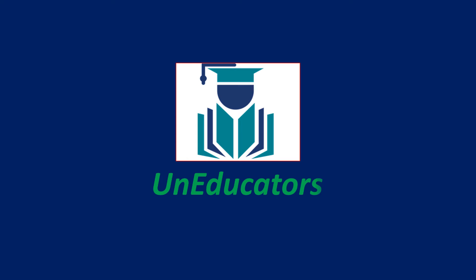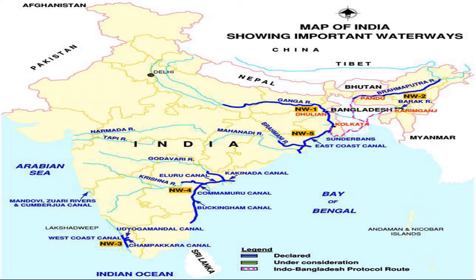Welcome to our YouTube channel UN Educators. In this video we will discuss the national waterways locations on the map. There are national waterways numbered one, two, three, four, and fifth. The sixth one is located near Assam.